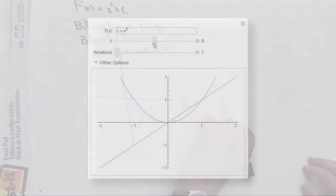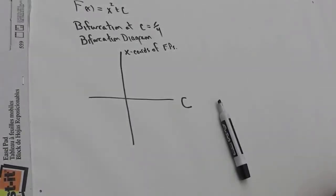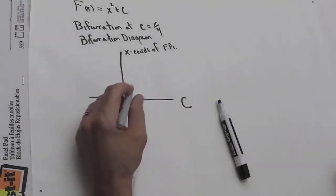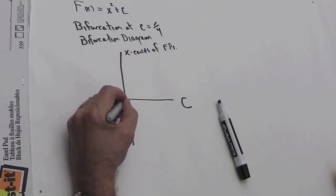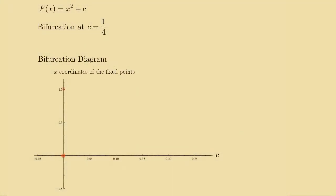So, let's go back and remember that when c was 0, we had two fixed points, one at 0 and one at 1. So, let's put those in the bifurcation diagram. One fixed point where c is 0, we have one fixed point at 0 and one fixed point at 1.